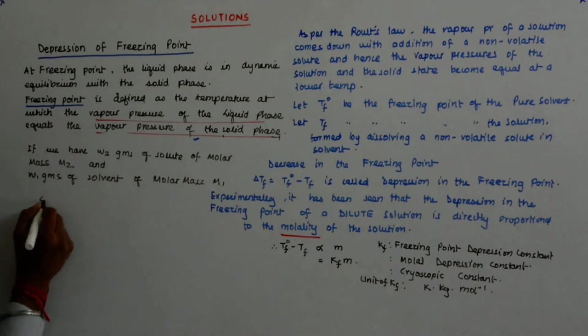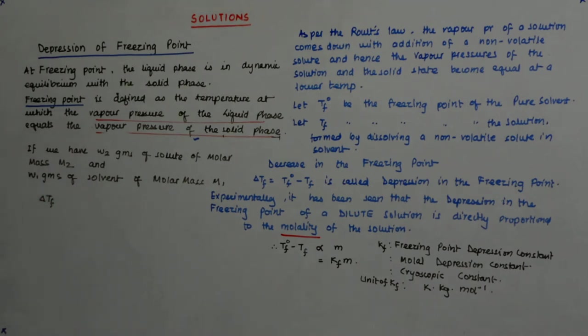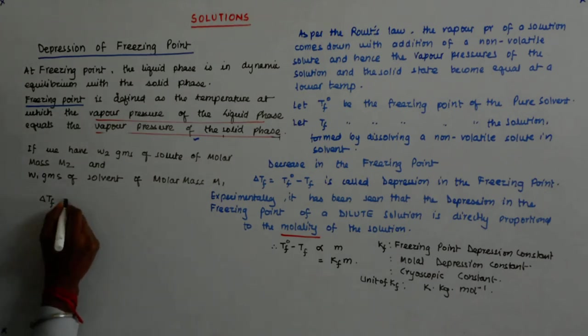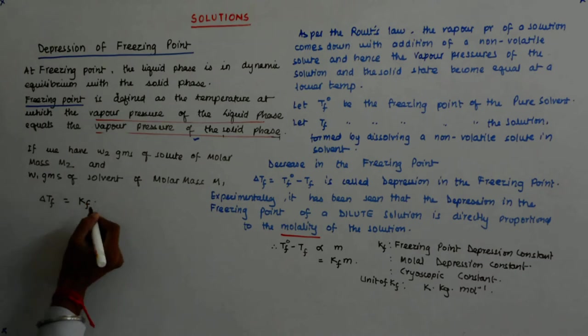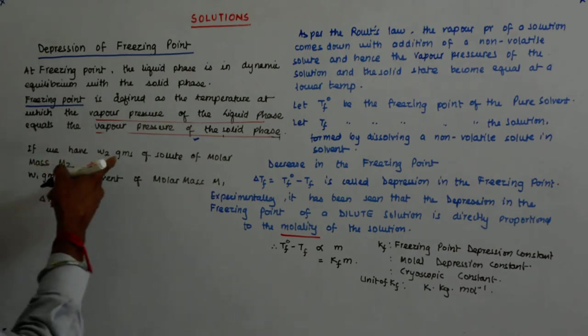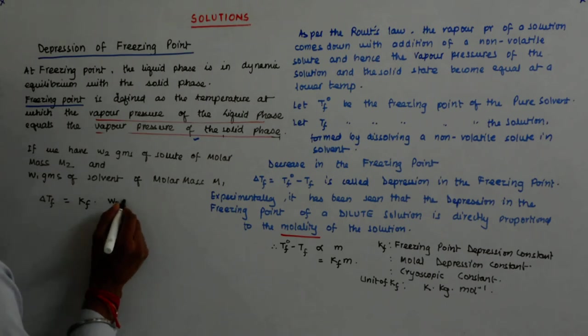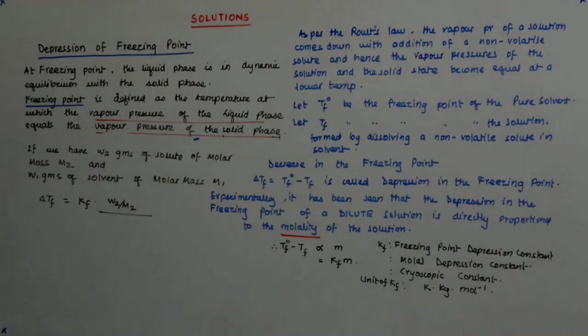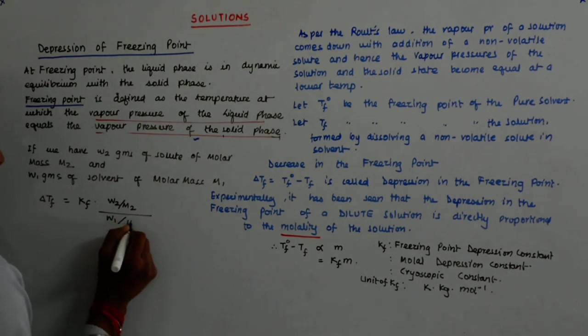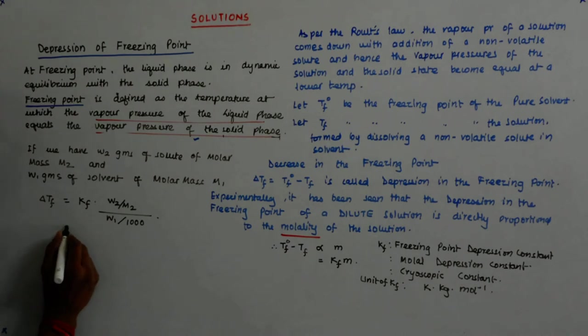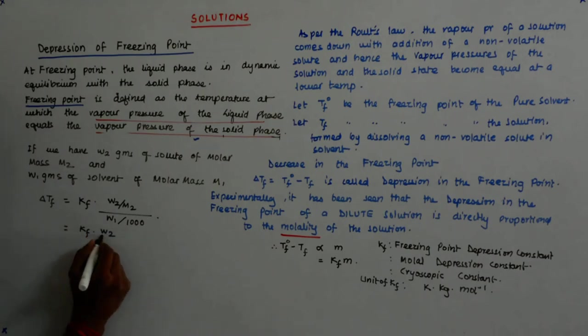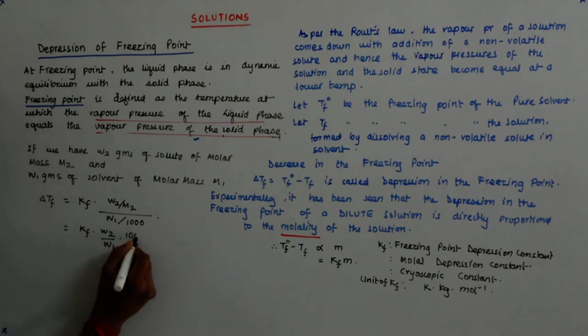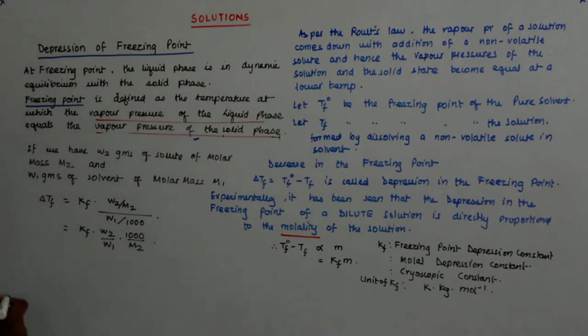Then, by this equation, delta Tf equals Kf times the molality. That is the number of moles of the solute: W2 upon M2 divided by the number of kilograms of the solvent. So W1 grams divided by 1000. That becomes Kf times W2 upon W1 times 1000 upon M2.